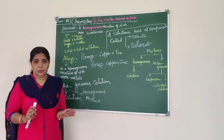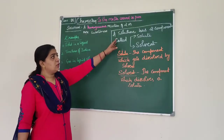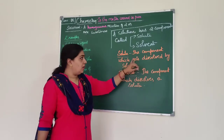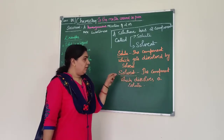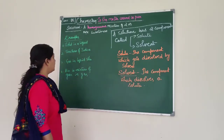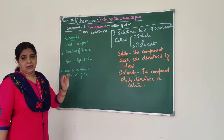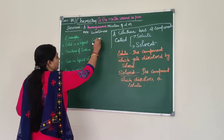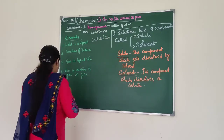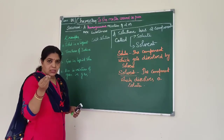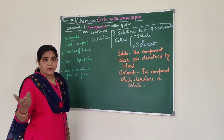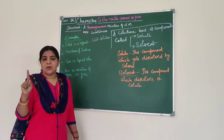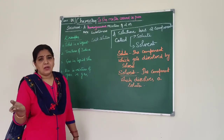Let us see a few examples of solution. A solution has two components: solute and solvent. Solute is the component which gets dissolved by the solvent. For example, solid in a liquid — if we take sugar solution, sugar is the solute which is getting dissolved by the solvent, which is water.